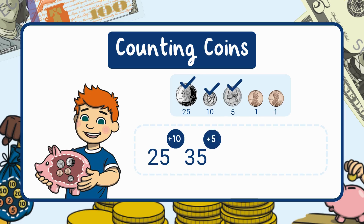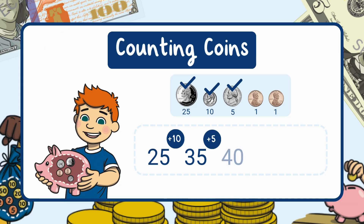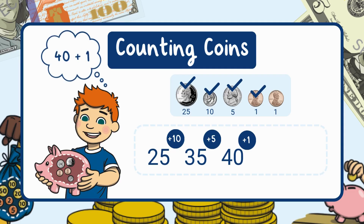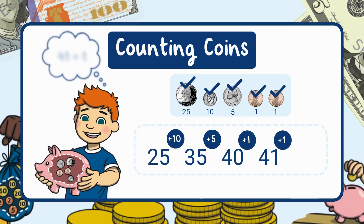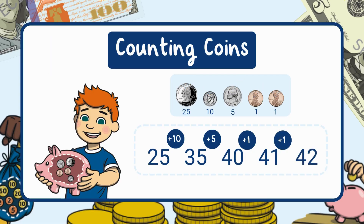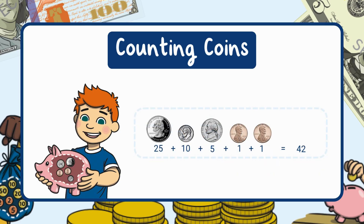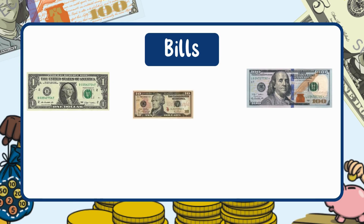Now let's add a nickel. A nickel is worth 5 cents: 35 plus 5 equals 40. Last, we have two pennies. Each penny is worth one cent: 40 plus 1 equals 41, then 41 plus 1 equals 42 cents. When we add the value of all the coins together, we get 42 cents in total.